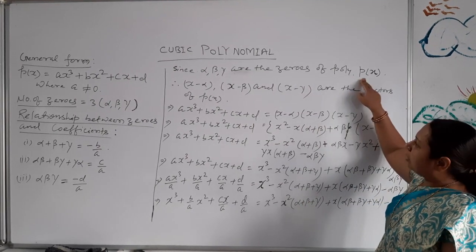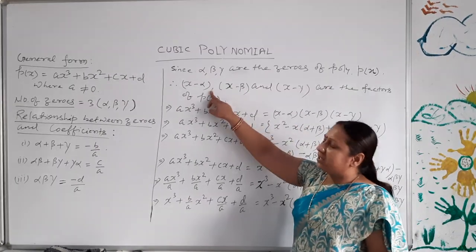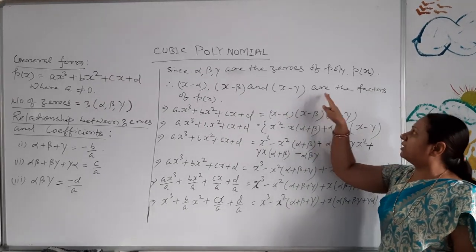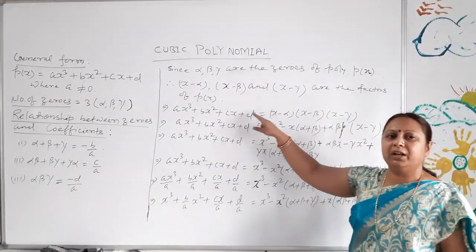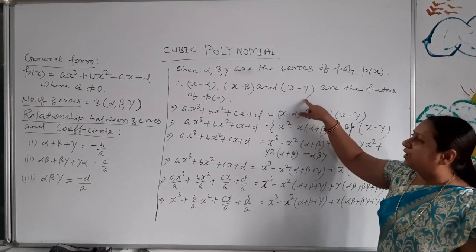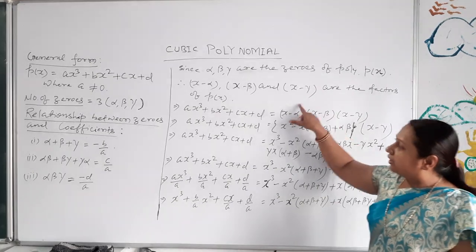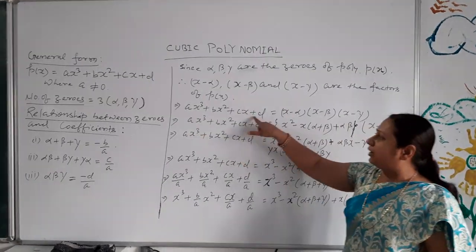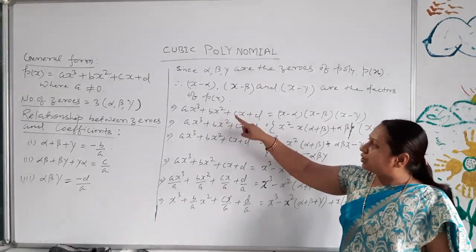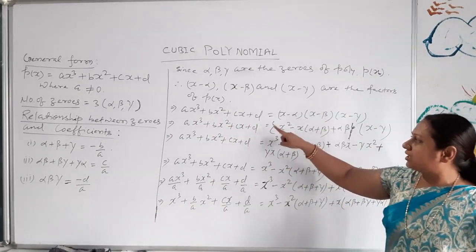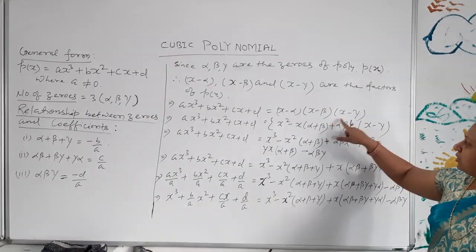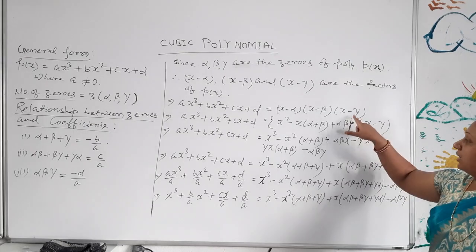If alpha, beta, and gamma are the zeros of the polynomial, it means (x − alpha), (x − beta), and (x − gamma) are the factors of the polynomial. When we multiply (x − alpha)(x − beta)(x − gamma), we get the polynomial ax³ + bx² + cx + d.